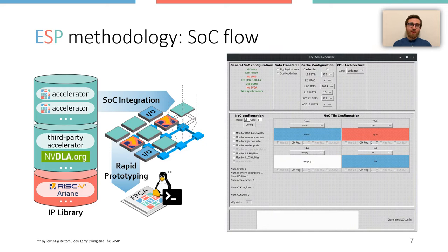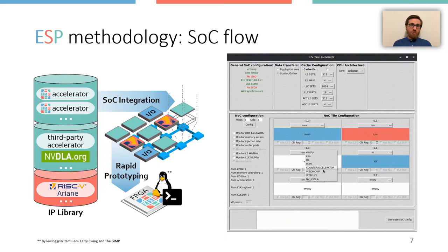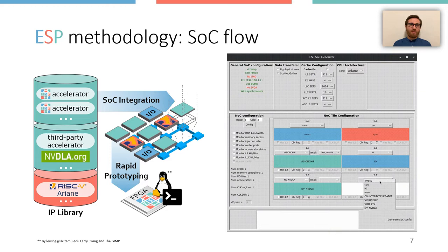The ESP graphical user interface guides the developers through an interactive SoC design flow that allows them to choose the size of the tile matrix and therefore of the corresponding NOC configuration, choose the mix of components in the tiles, select the desired implementation for each accelerator, select the desired processor core, determine the cache hierarchy configuration, select the clock domain of each tile, and enable the desired system monitors. Once this configuration phase is completed, the designers can rely on the SoC flow for FPGA prototyping.